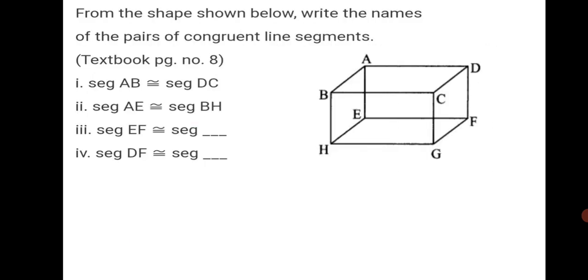From the shape shown below, write the names of the pairs of congruent line segments. It is in your textbook on page number 8. By looking at the figure, you will come to know that seg AB is congruent to seg DC. Opposite sides of a rectangle are equal. They are congruent, they can coincide exactly with each other. This is a cuboid.